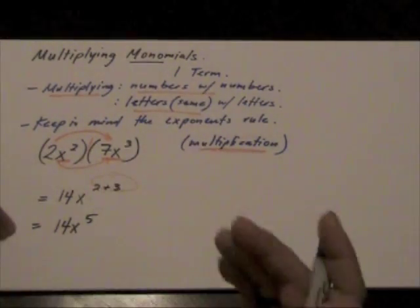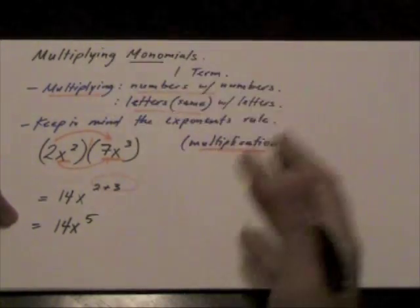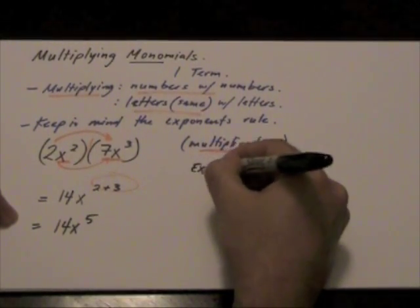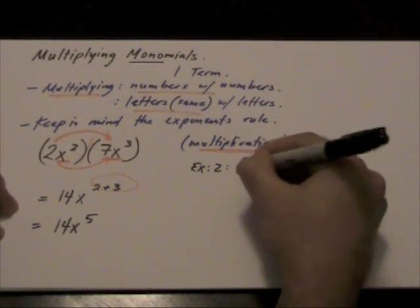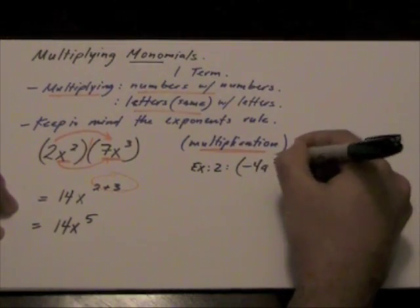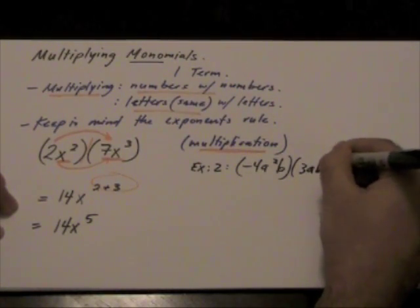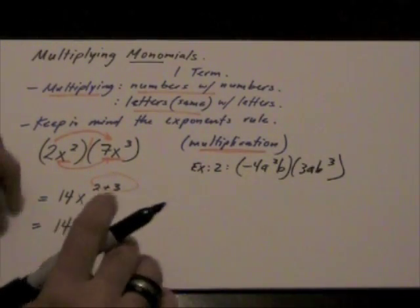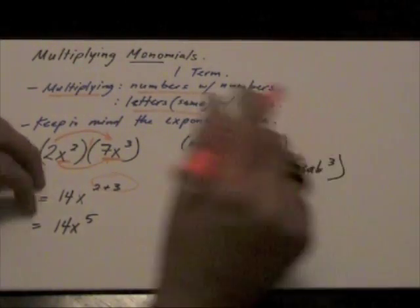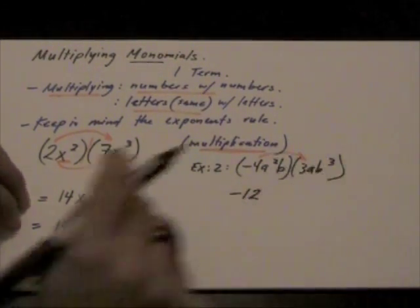Let's look at another example, a little bit more challenging, just because we're going to add an additional variable. So our next example, example 2. We have negative 4a squared b, 3ab cubed. Whenever we are multiplying again, same rules apply. Numbers with numbers, so negative 4 times 3 will give me negative 12.